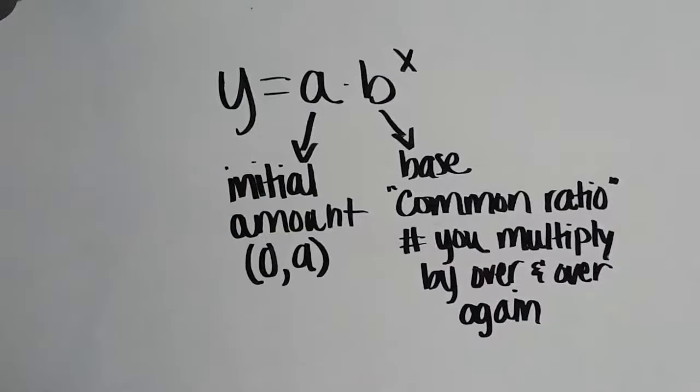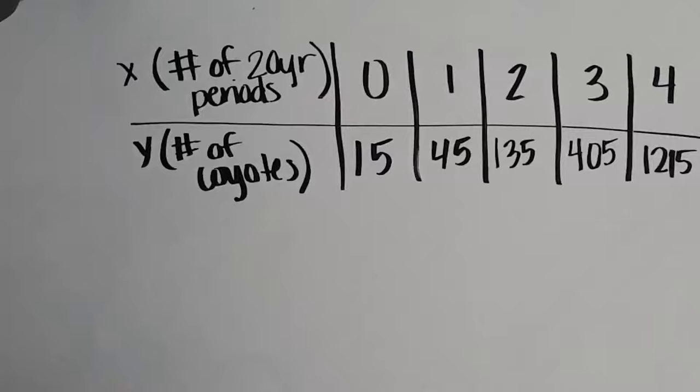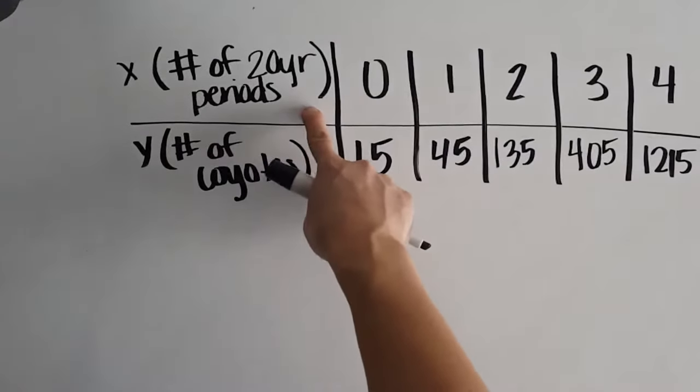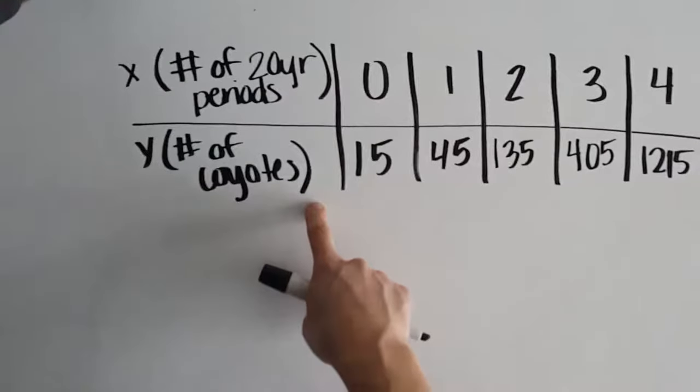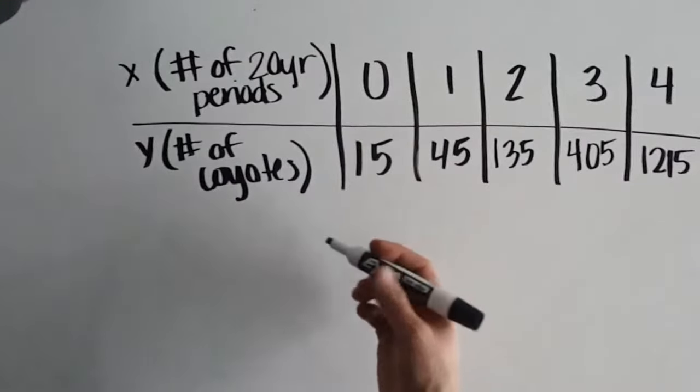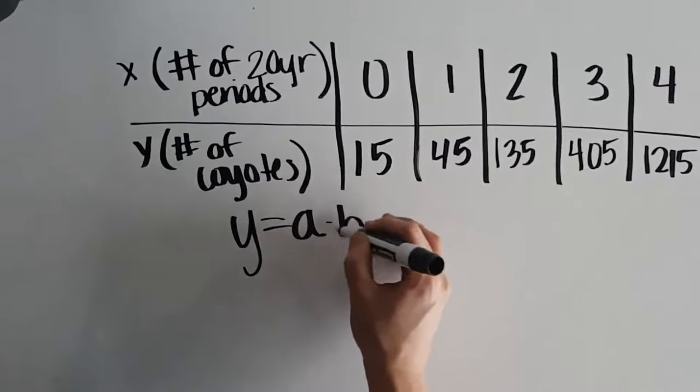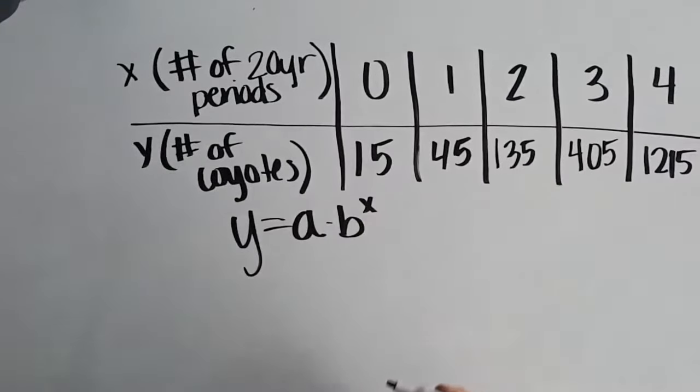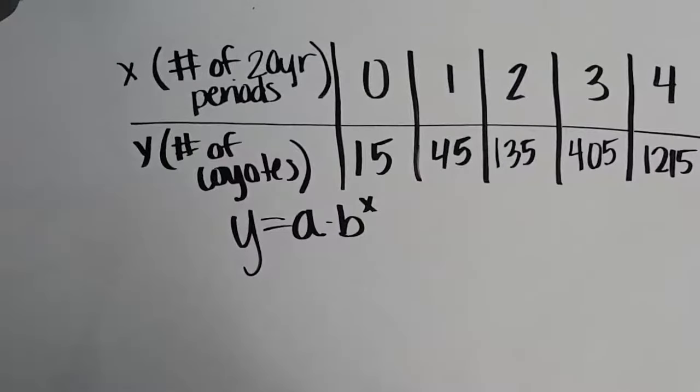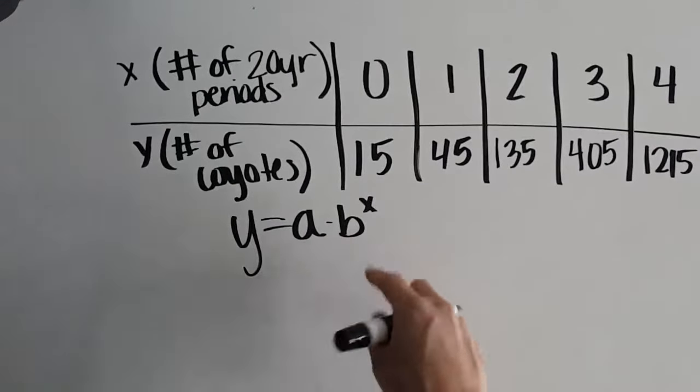So now let's do some examples to actually write our equations. In this example, we're given a table to show us the number of 20-year periods in relation to the number of coyotes. So the first thing we need to do is identify the values we're looking for. So we need a, that's our initial value, and we need b, that's our multiplier. So we want to write an equation that shows us the number of coyotes for x number of 20-year periods.